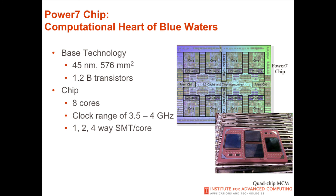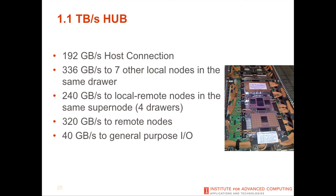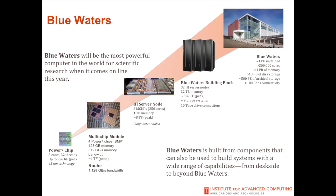We use the Power 7 processor, IBM's newest and most powerful processor. They're arranged in groups of four chips; each chip has eight cores, meaning there are 256 cores in each drawer and thousands of cores in each rack. They're connected by a special network capable of over one terabyte per second — that's a thousand billion bytes per second, equivalent to 50,000 cable modems for this one chip. The full system has about 18 petabytes of disk and 500 petabytes of tape, providing immense data storage capability and the ability to work with enormous data sets.